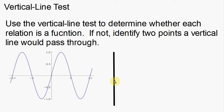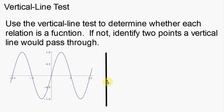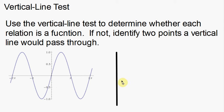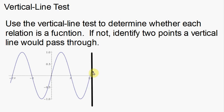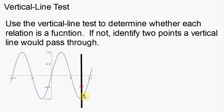Now with this vertical line, I'm going to pass over the graph and see if the vertical line is going to intercept the graph at two separate points. We're trying to pass this line over this graph and see if it hits two points. As I start here on the right side, the line is intercepting at one point — intercepting at one point. Notice we're down here now, intercepting at one point, still intercepting at one point.